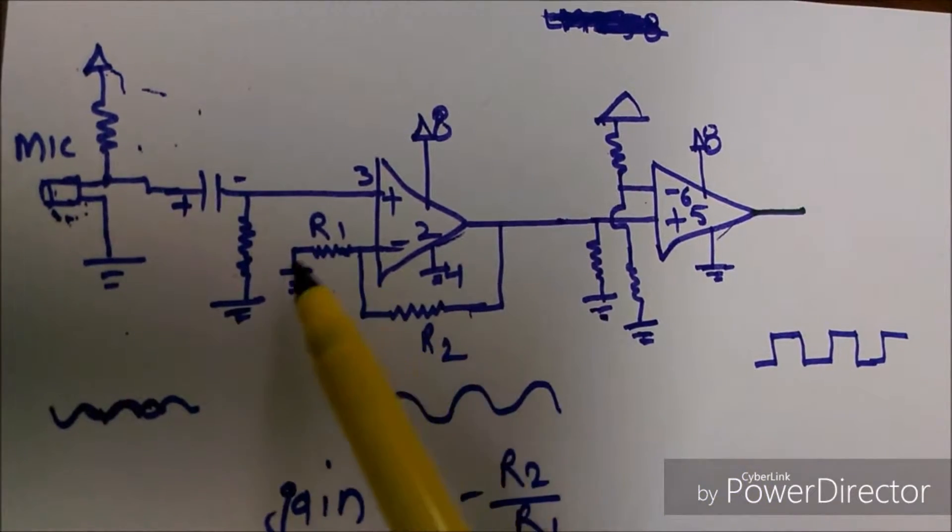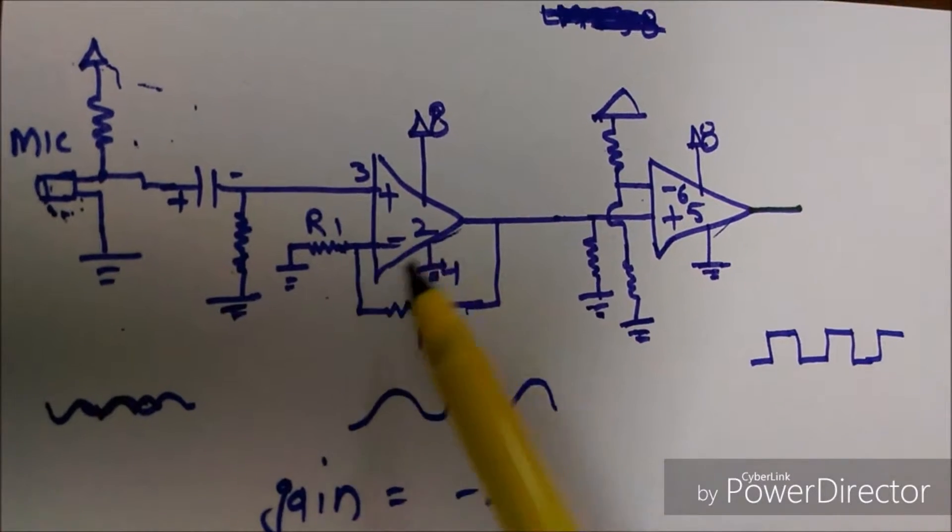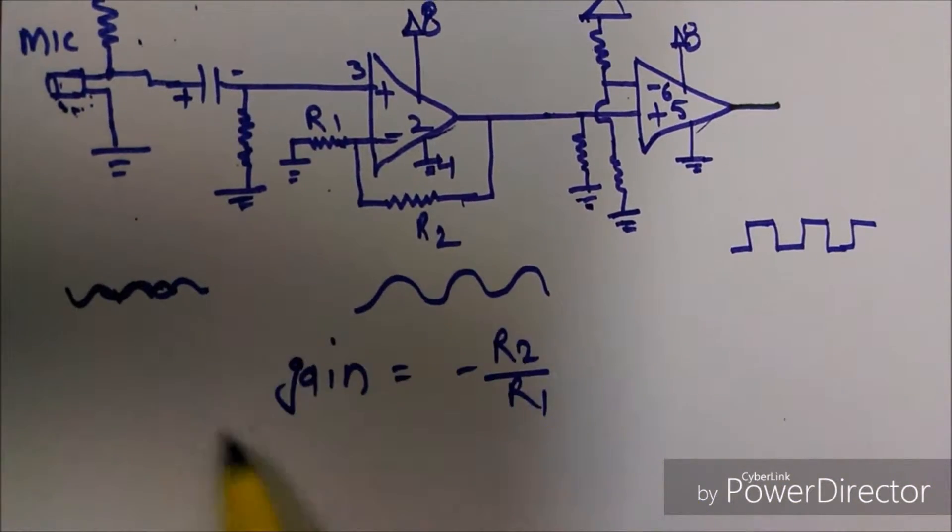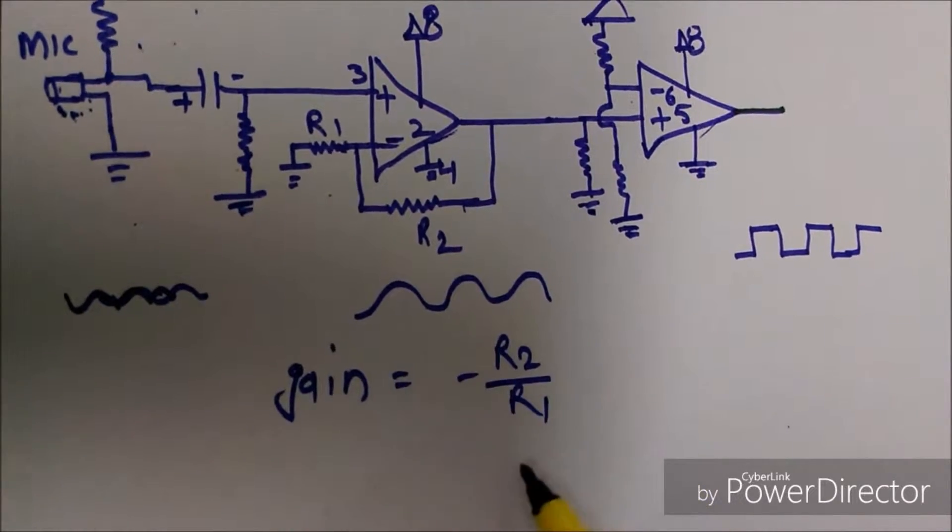This one is a feedback circuit that is used to control its gain, and its gain is minus R2 upon R1.